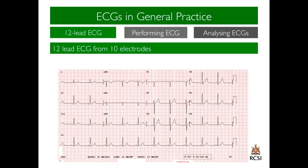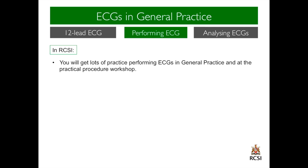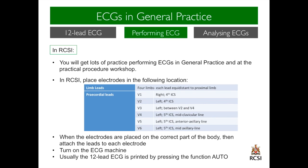This 12-lead ECG represents normal sinus rhythm. One box represents 0.2 of a second, so five boxes represents one second. In RCSI, you will get lots of practice performing ECGs in general practice and at the practical procedure workshop. We recommend placing the electrodes in the following locations. The limb leads should all be equidistant to the proximal limb, and the electrodes for V1 to V6 should be located in these locations. When the electrodes are placed in the correct part of the body, you should then attach the leads to each electrode, then turn on the ECG machine and then print the 12-lead ECG.